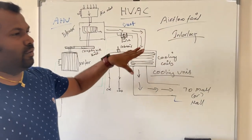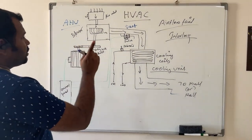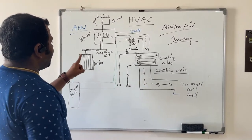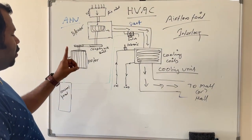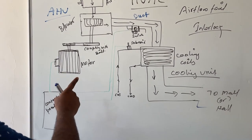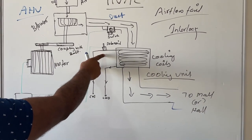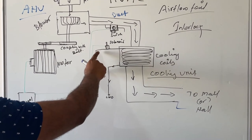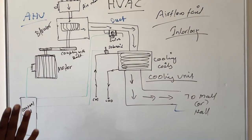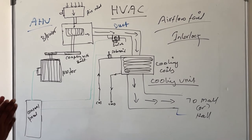To avoid this problem, we use the airflow fail interlock system. In the AHU system, the blower will be started first. Once this blower is started, then the supply will be given to the solenoid coil where cooling gas or cooling water will be circulated through the cooling coils.